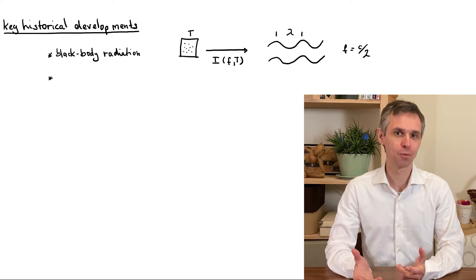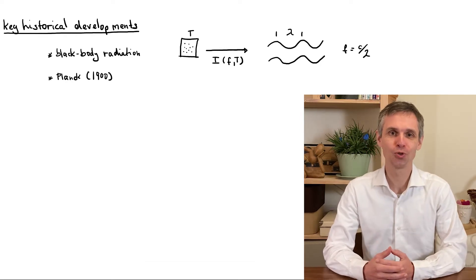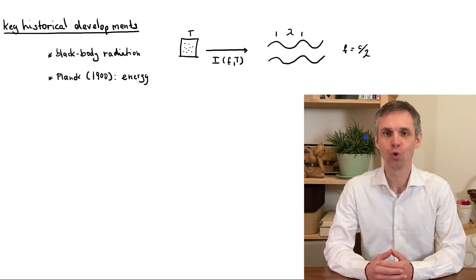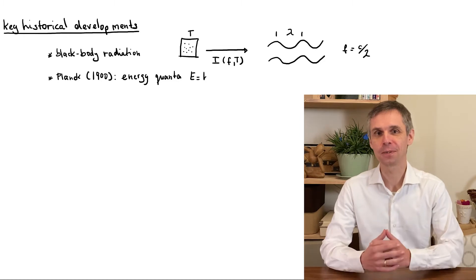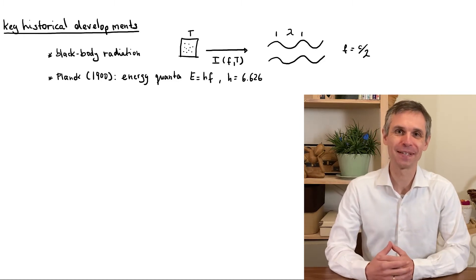This intensity distribution posed many riddles, which were resolved when Planck introduced the idea that energy appears in discrete units, known as quanta, of h times the frequency, where h is a fundamental constant that now carries Planck's name.